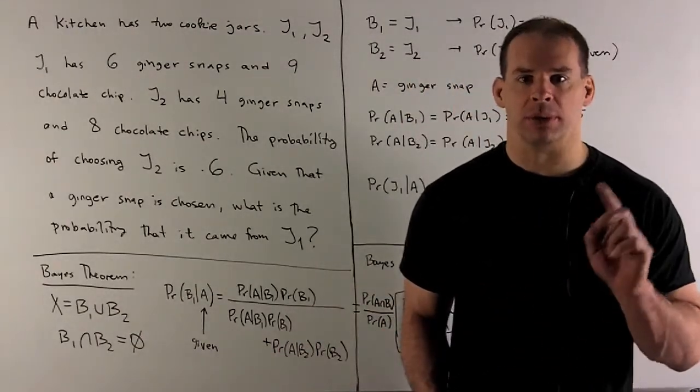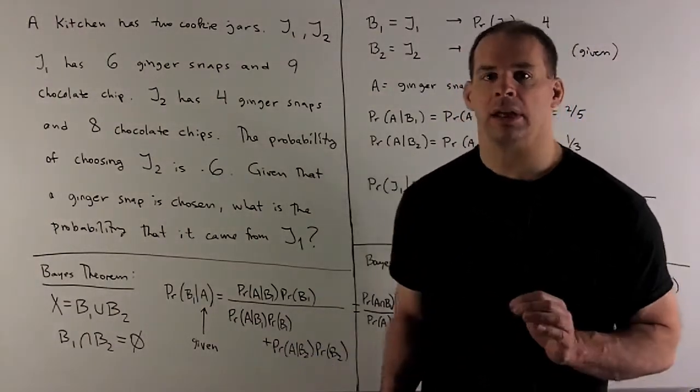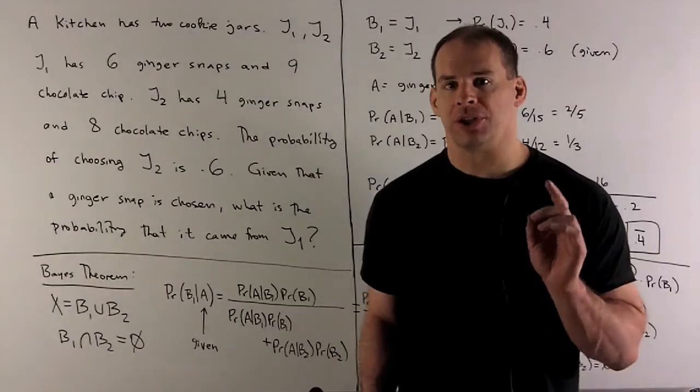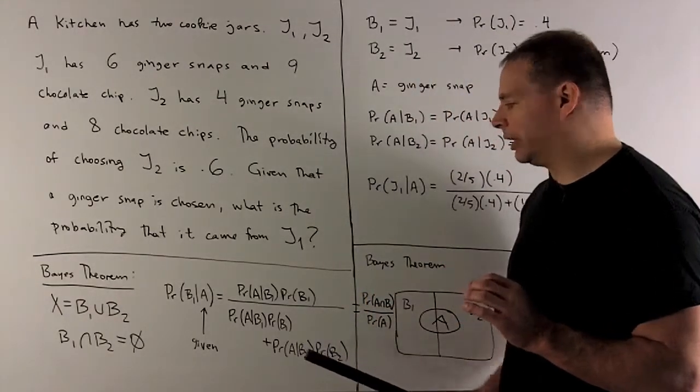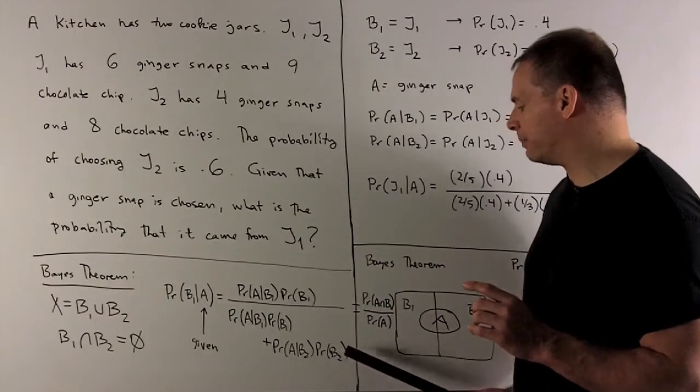So if we had B1, B2, B3, B4, we would need four of these terms. In this case, I only need to put a term in for B2. So I'll have probability of A given B2 times probability of B2.